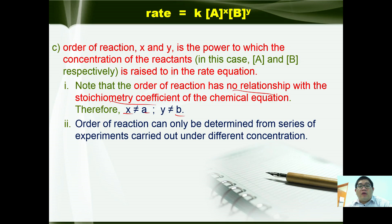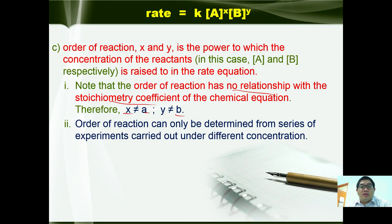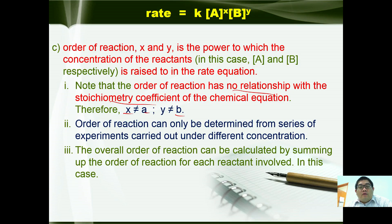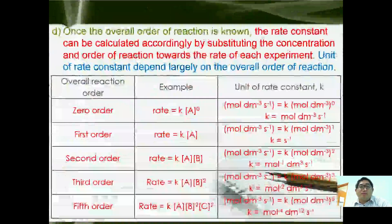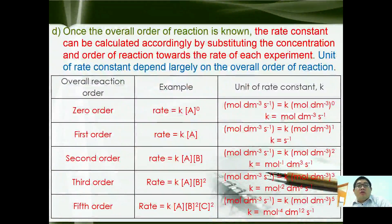Order of reaction can only be determined from a series of experiments carried out under different concentrations, which we shall discuss later on. The overall order of reaction can be calculated by summing the order of reaction for each reactant involved — in this case, overall order of reaction is x plus y. Once the overall order is known, the rate constant can be calculated by substituting the concentration and the order of reactions into the rate of each experiment.